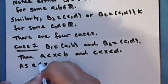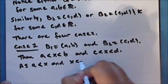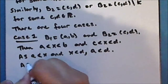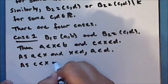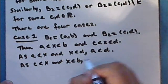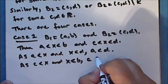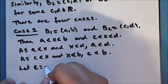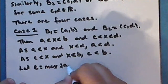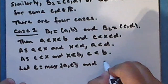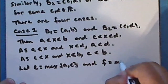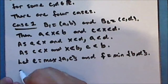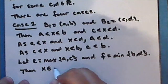So as A is less than X and X is less than D, we have that A is less than D, and as C is less than X and X is less than B. Let E be the larger of A and C, and let F be the smaller of B and D. Then the point X is in the open interval from E to F, which is a subset of the intersection of B sub 1 with B sub 2.